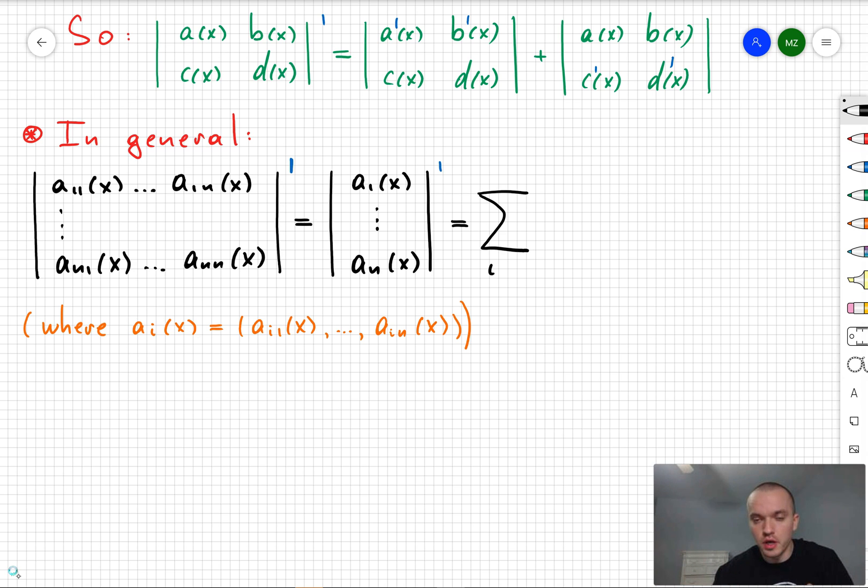And what we can do corresponding to the previous example, then the derivative of that determinant is going to be just the sum of determinants where the i-th term is going to be the original determinant, but your i-th row is going to be taken with primes. So basically what you do, you take the derivative of your i-th row.